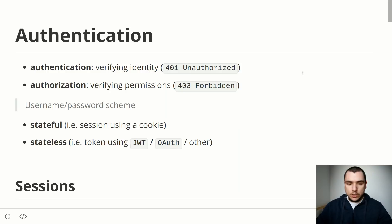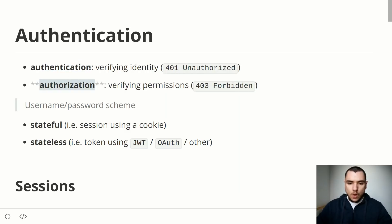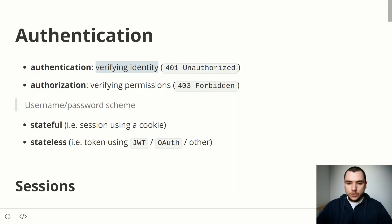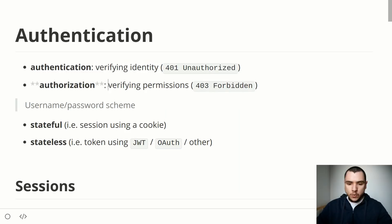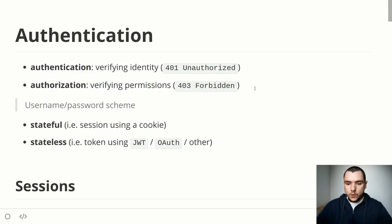First of all, when talking about authentication, it's important to make a distinction between authentication and authorization. Authentication is the process of verifying the identity of the user — essentially determining who the user actually is. Authorization on the other hand is the process of verifying user permissions — what the user is able and not able to do in the system.